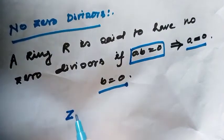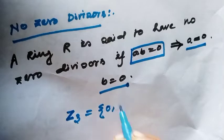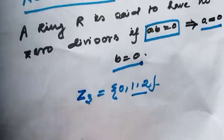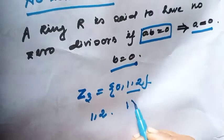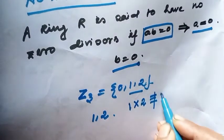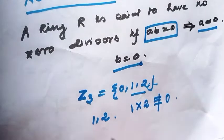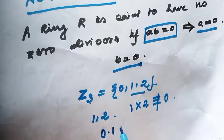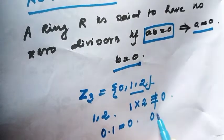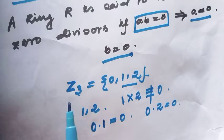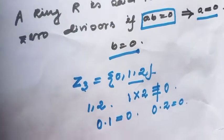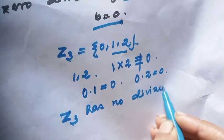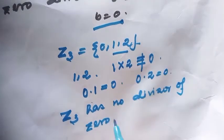For example, consider the ring Z3, which contains {0, 1, 2}. The non-zero elements are 1 and 2. Notice that 1×2 = 2, which in modulo 3 is not congruent to 0. If we take the element 0 and 1, then 0×1 = 0, and also 0×2 = 0. But in these cases one factor is zero. So this ring Z3 has no divisors of zero.